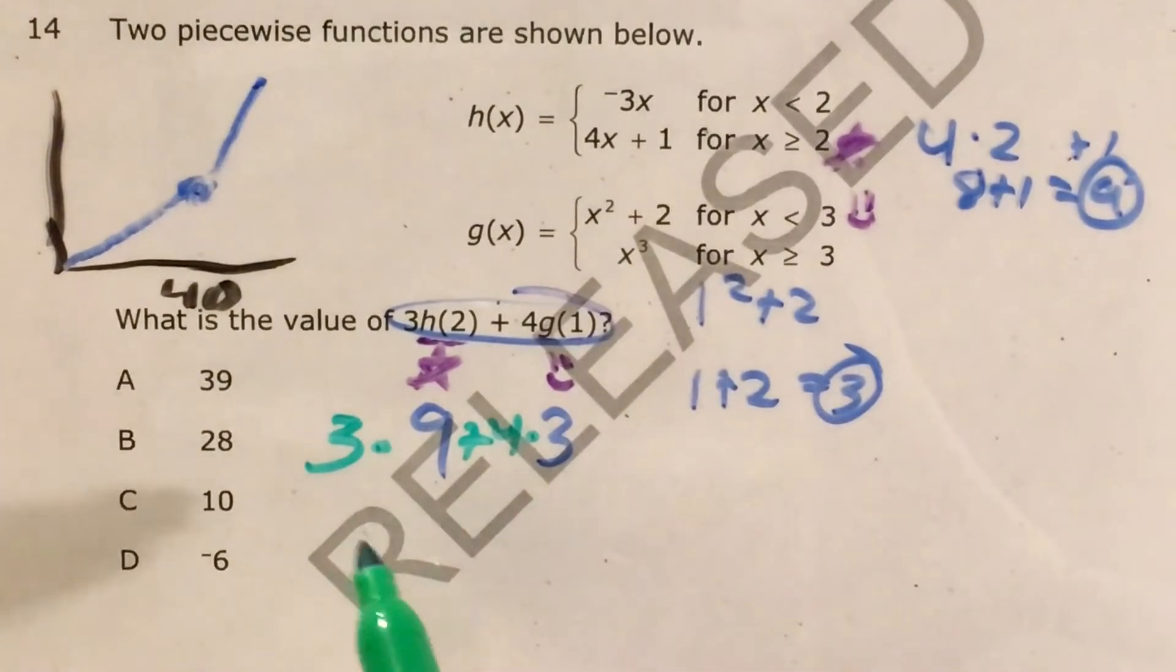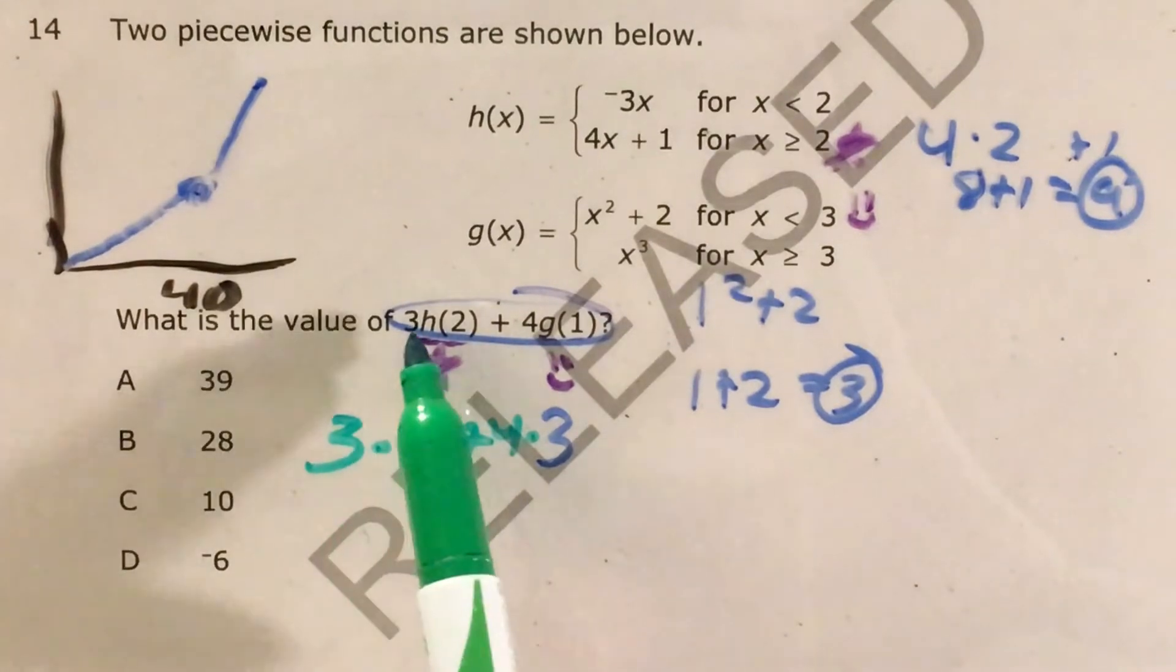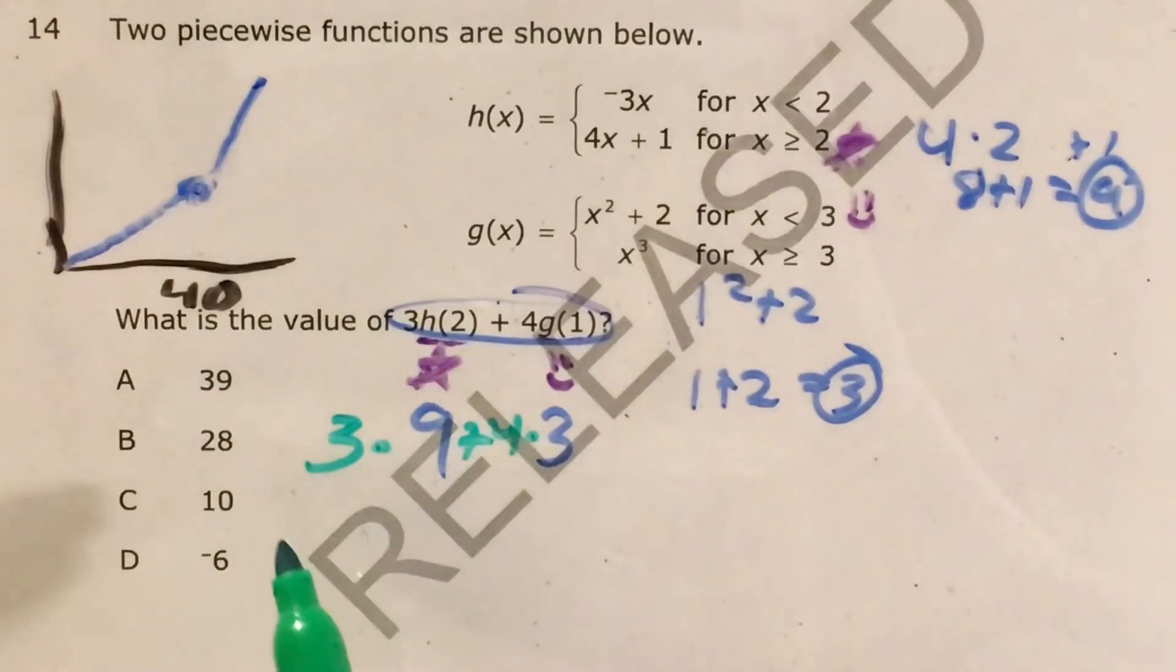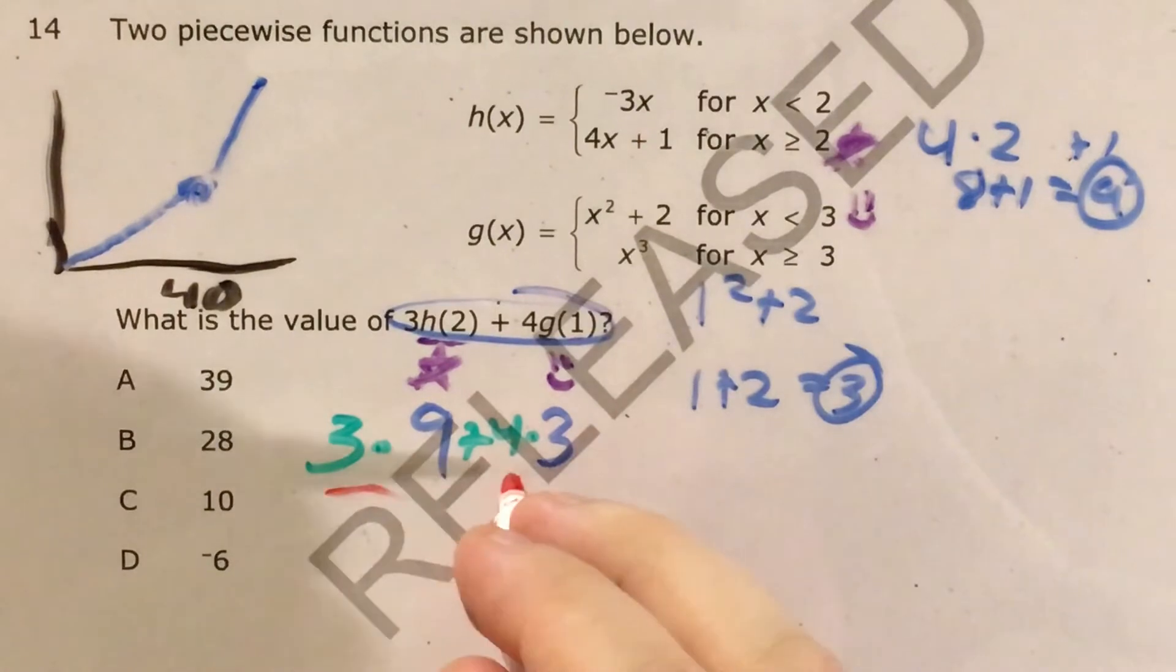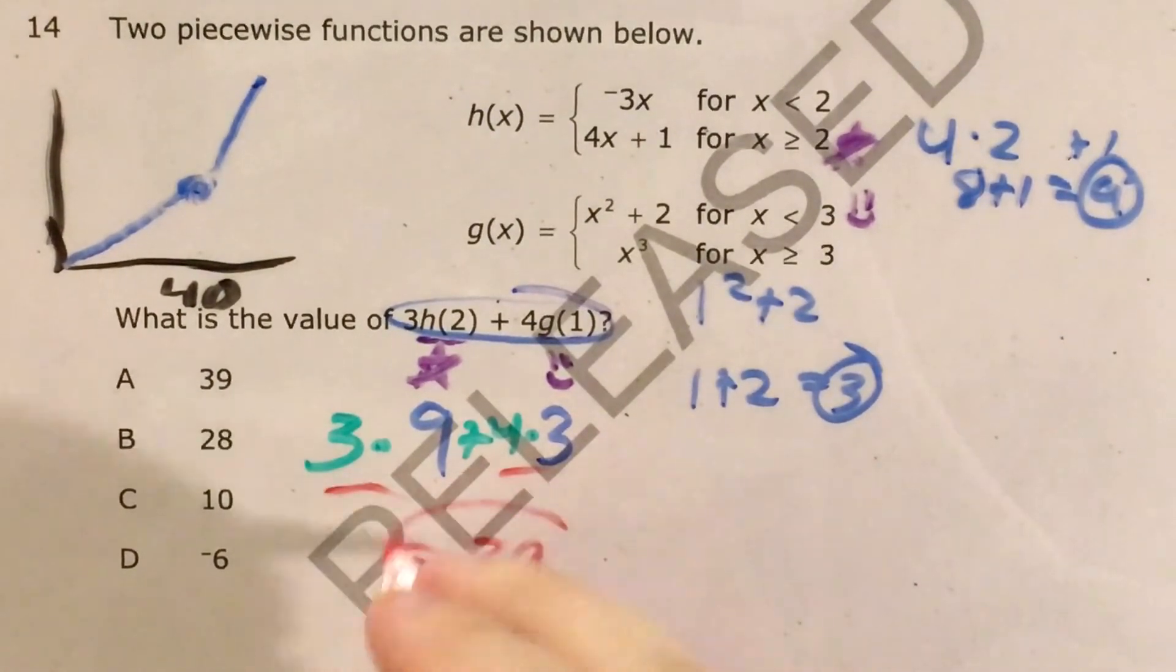And since I already wrote my numbers here, it was easy to just substitute in 3 times 9 instead of 3 times H of 2, and 4 times 3 instead of 4 times G of 1. Using your calculator or times tables, you should get that these two together, 27 plus 12 equals 39. So our answer is A.